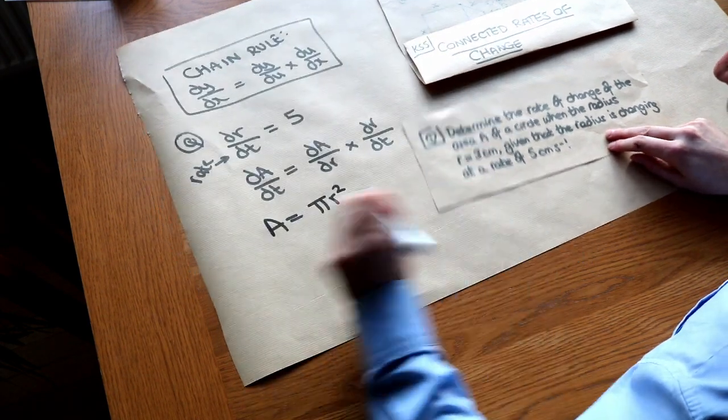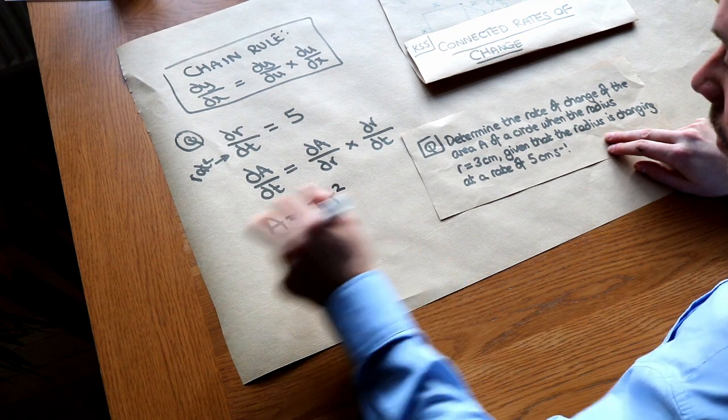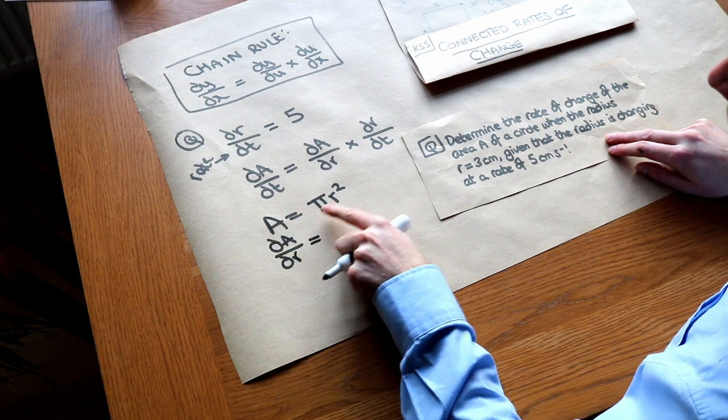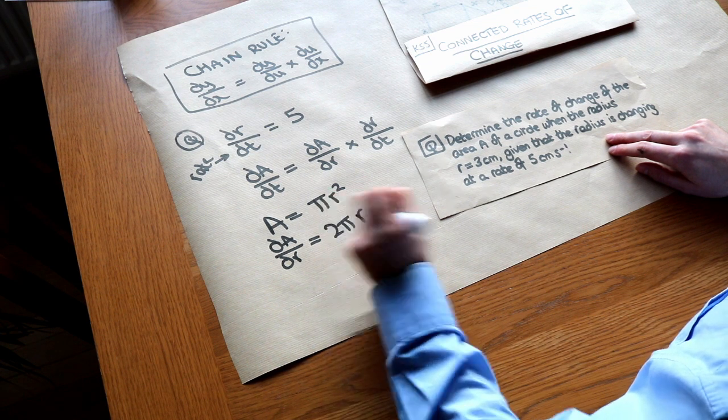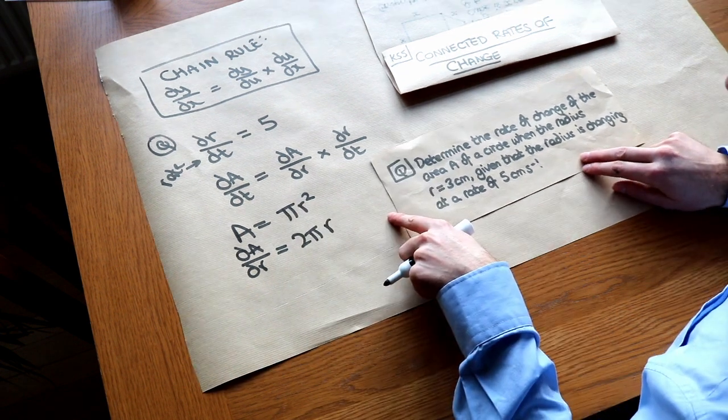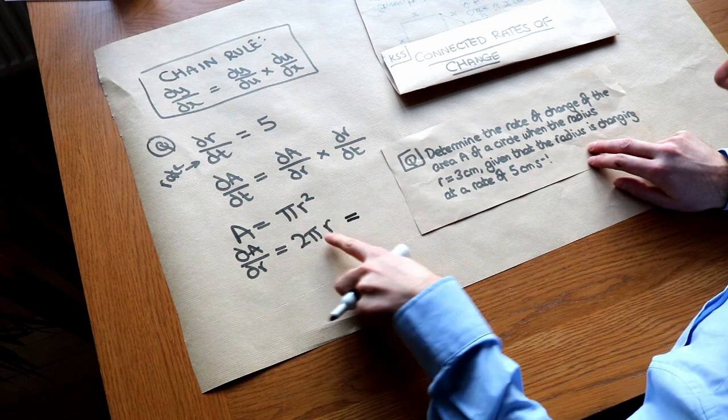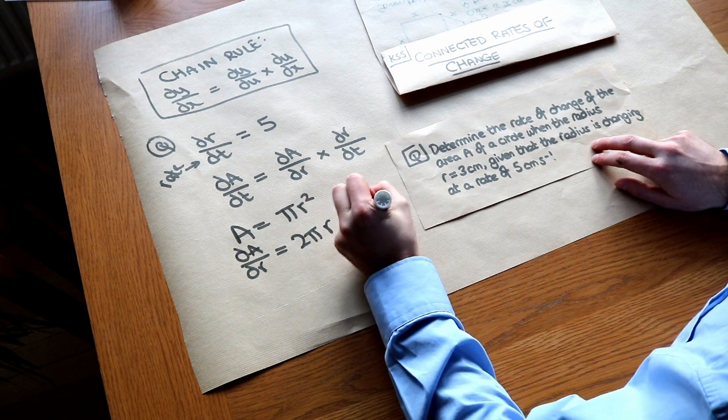What is the area of a circle in terms of the radius? Well, it's just pi r squared. If A is equal to pi r squared, then we can differentiate this with respect to R. So dA over dr would be, we times by the power, so 2 pi, and then reduce the power by 1, so it's just r. But we're interested in this rate of change when r is equal to 3. So when r is equal to 3, it'll just be 2 pi times 3, which is 6 pi.